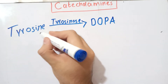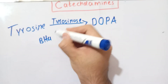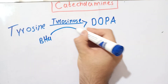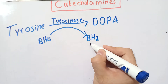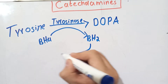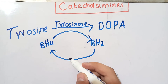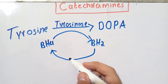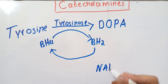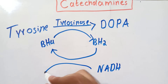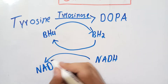The hydroxyl group is donated by tetrahydrobiopterin, which is in turn converted into dihydrobiopterin. This dihydrobiopterin is then converted back into tetrahydrobiopterin by the enzyme dihydrobiopterin reductase, with NADH donating hydrogen.